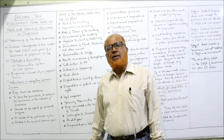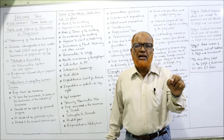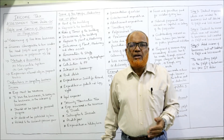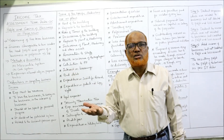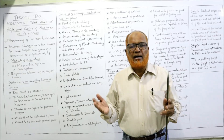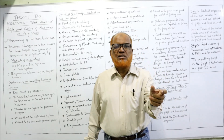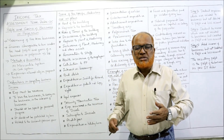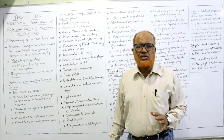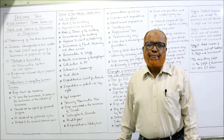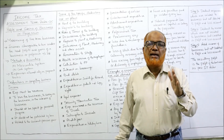Regarding deductions in computing business income: the Income Tax Act says any expenditure incurred to earn the income will be allowed as a deduction. Without spending money you cannot earn income. For example, if you are selling goods you have to purchase them — purchase is a cost. Similarly, rent, salary, electricity bill, telephone bill, and advertising are all expenses. From revenue if we deduct expenses we get the income. The rules are: the expenditure must be of a revenue nature, not capital expenditure.